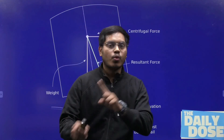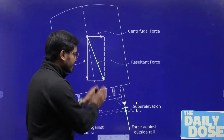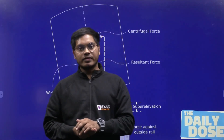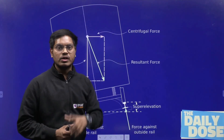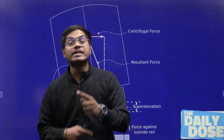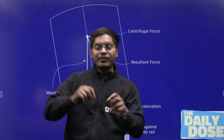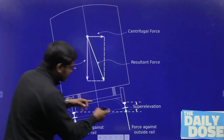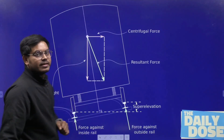But the question is why we are doing it. As soon as the train is going to come on a horizontal curve, it is going to experience a centrifugal force. This centrifugal force is actually trying to overturn the train. So to nullify this overturning, we need to raise the outer rail with respect to the inner rail.